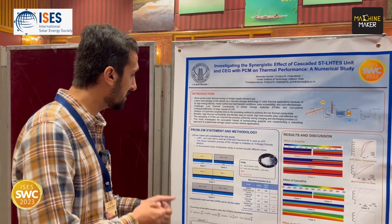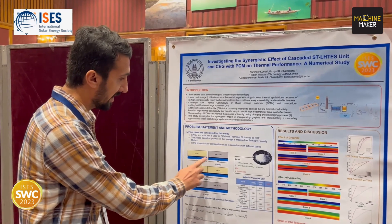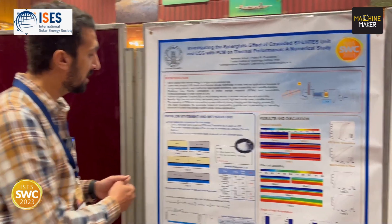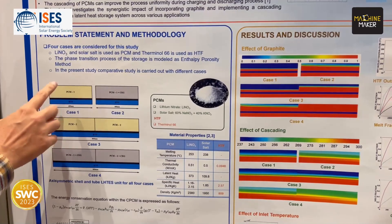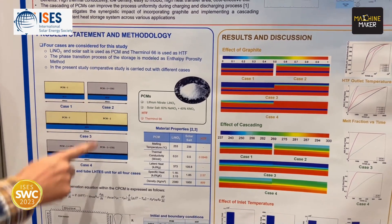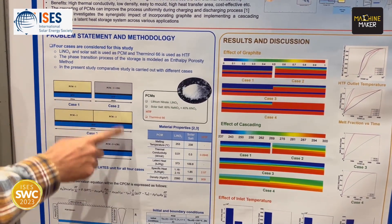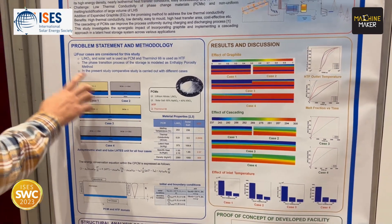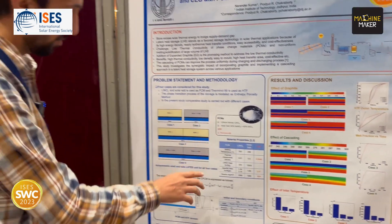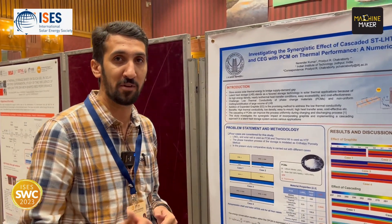For this numerical study, we considered two cascaded systems, so two phase change materials of nitrate salts are considered. We considered four different case studies with pure PCM and with CEG, including cascading systems. Lithium nitrate salt and solar salt were used as phase change materials, and Thermilo 66 was used as the heat transfer medium.